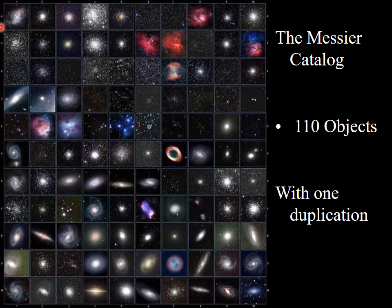We also have M42, the Orion Nebula, and M45, the Pleiades. There is a variety of different kinds of objects in the catalog. M1, the very first object, is a cloud of gas given off when a star exploded.